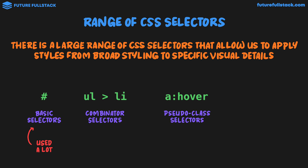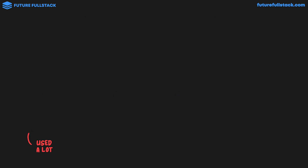The last type of selector is a Pseudo-Element selector. These selectors can target a specific part of an element. As you can see, there's a wide range of different selectors and we'll be going through each of them in great detail in this topic. Let's look at the most basic type of selector, the type selector, otherwise known as the element selector.